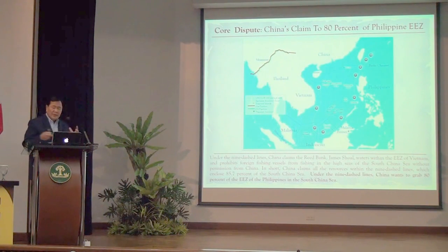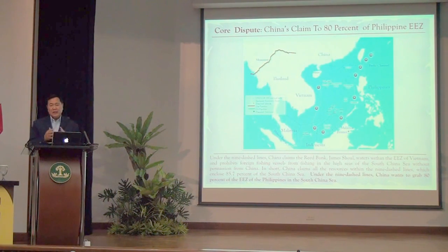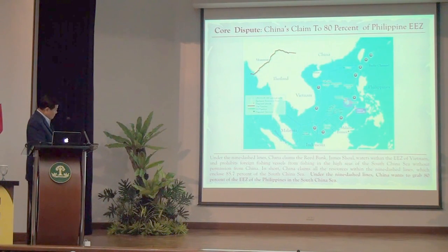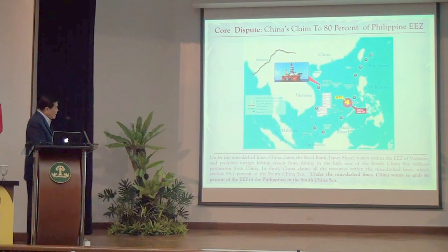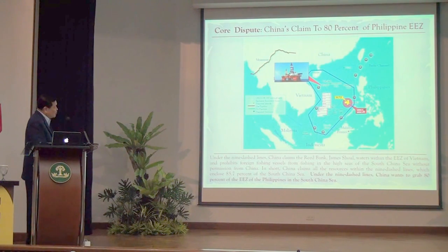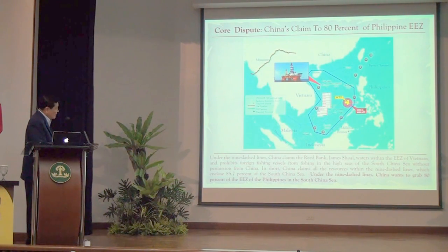The dispute between China and the Philippines, as well as the other claimant states, is basically a dispute over resources. China is claiming 80% of our exclusive economic zone. In 2010-2011, China claimed sovereignty over Reed Bank, deep within our EEZ. In 2012, China auctioned off areas within the EEZ of Vietnam. In 2014, China issued a new fisheries regulation saying any foreign fishing vessel wishing to fish within the area enclosed by these lines must secure permission from China — so China is even claiming the high seas.